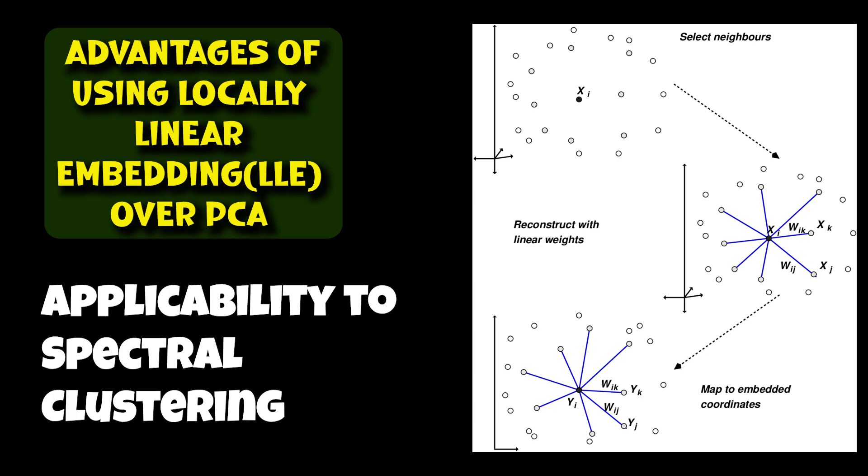For example, in a document clustering task with documents that belong to different topics, LLE can help capture the local word co-occurrence patterns, which can lead to better clustering performance when combined with spectral clustering techniques.